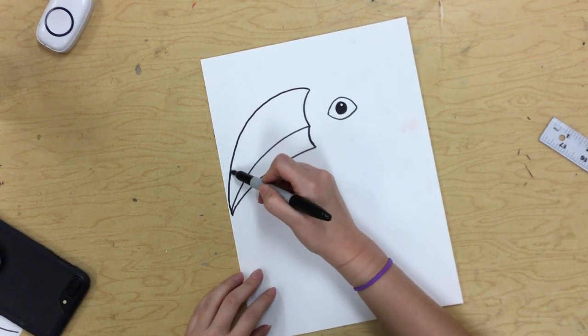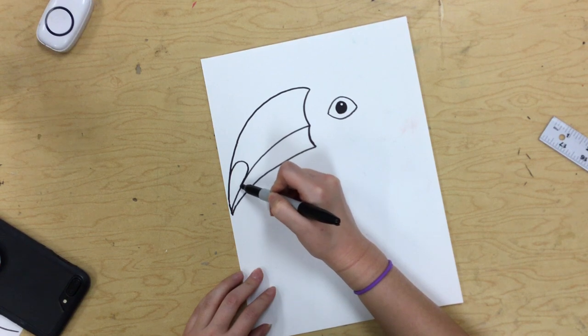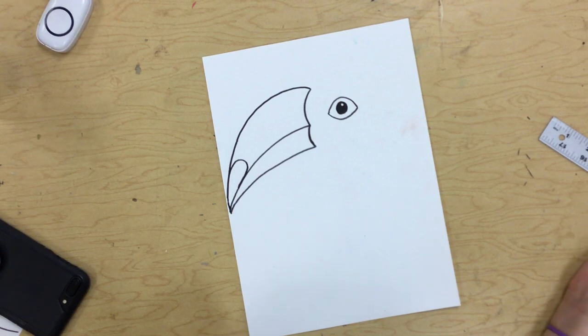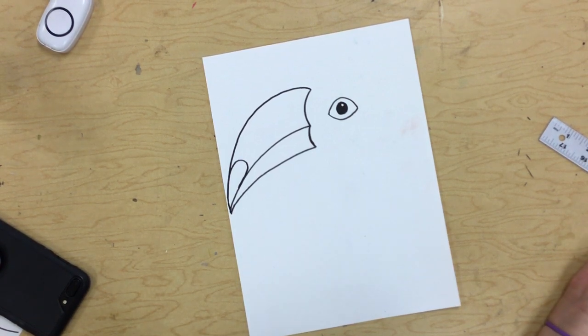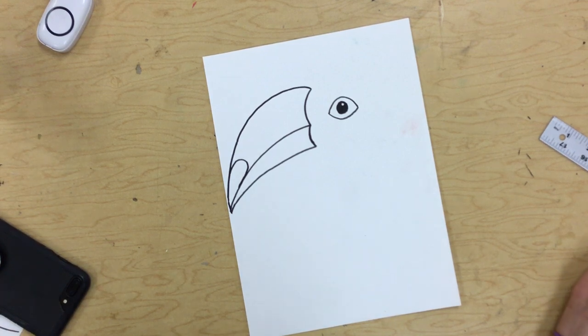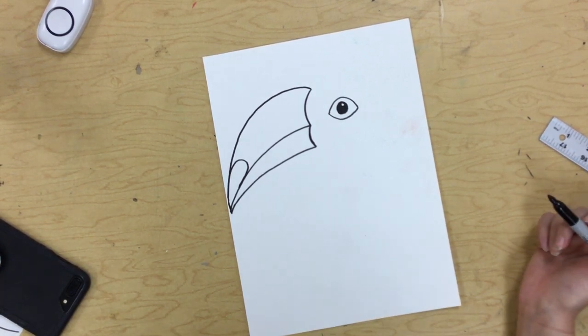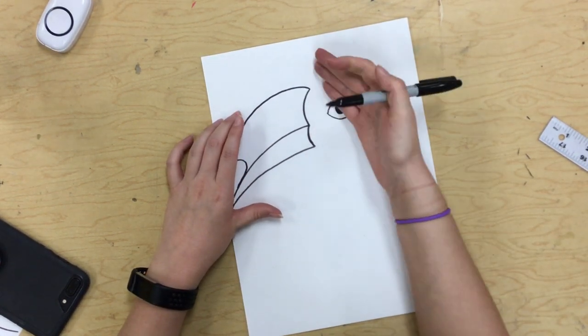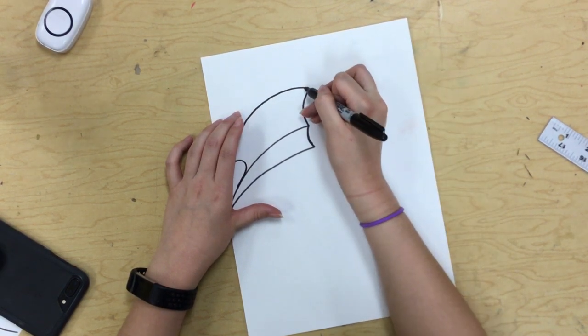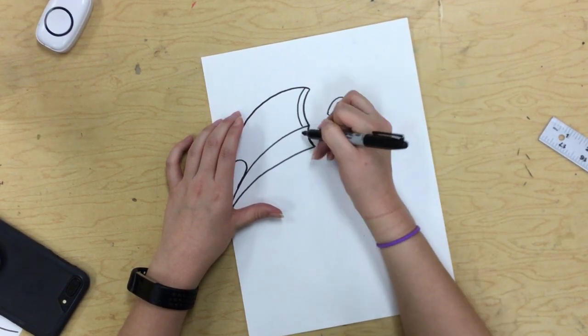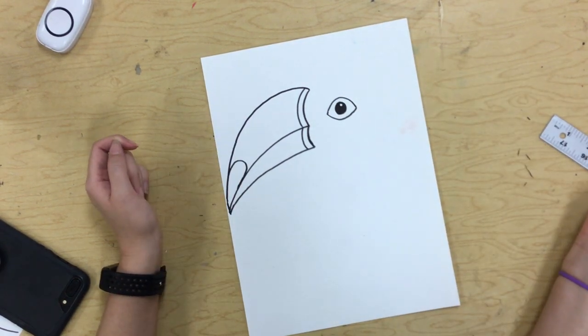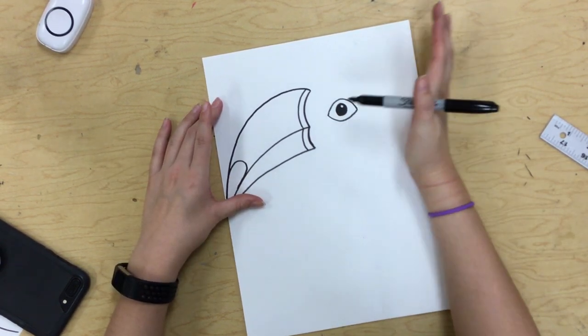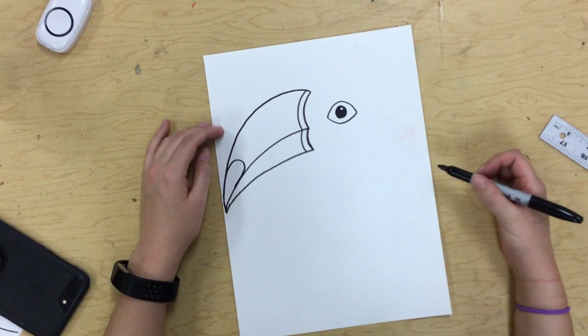Then we're going to make a little curved section at the tip of his beak. Now back towards the front of his beak, I'm going to make two lines that just go parallel to these two curved lines that we've already made.